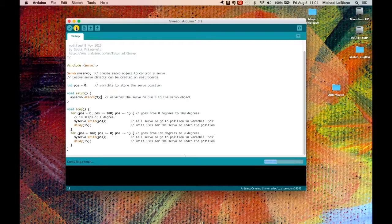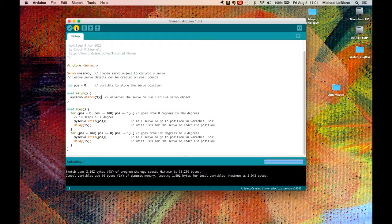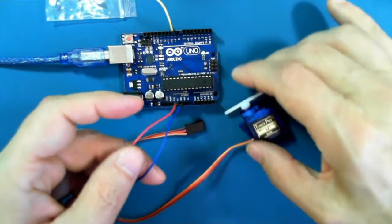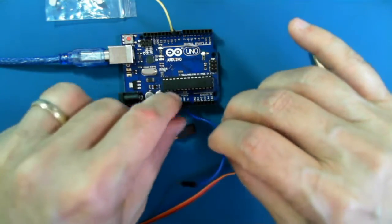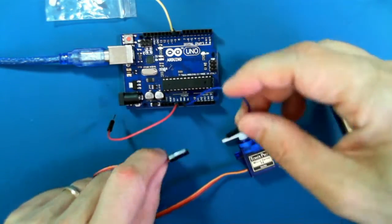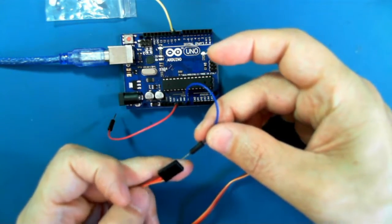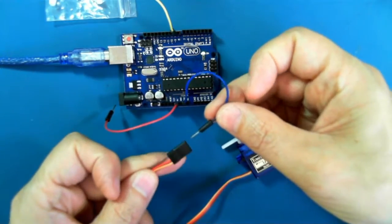So let's upload it and switch over to our camera. So we've uploaded the sketch, but we haven't actually connected up the servo. So I'm connecting the brown pin to ground.